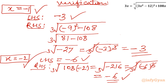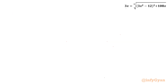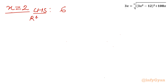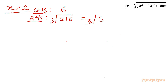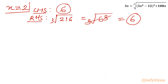For x = +2: LHS = 3(2) = 6. RHS = cube root of [(3(4) − 12)² + 108(2)] = cube root of [(0)² + 216] = cube root of 216. Since 216 = 6³, the cube root gives 6, which matches LHS. Hence x = 2 is a verified true solution.